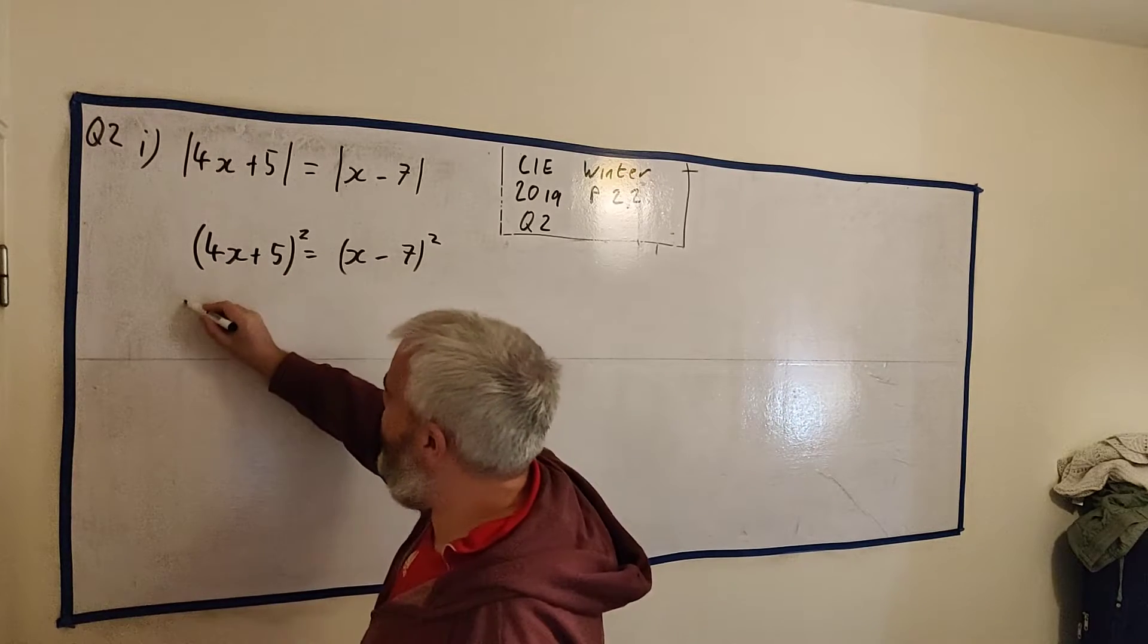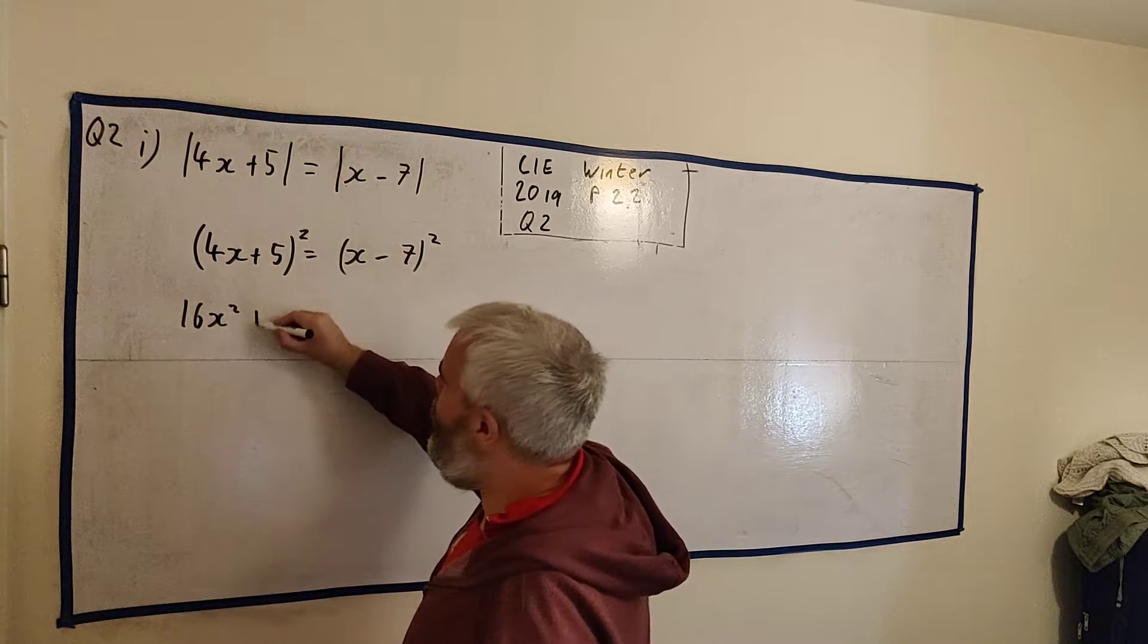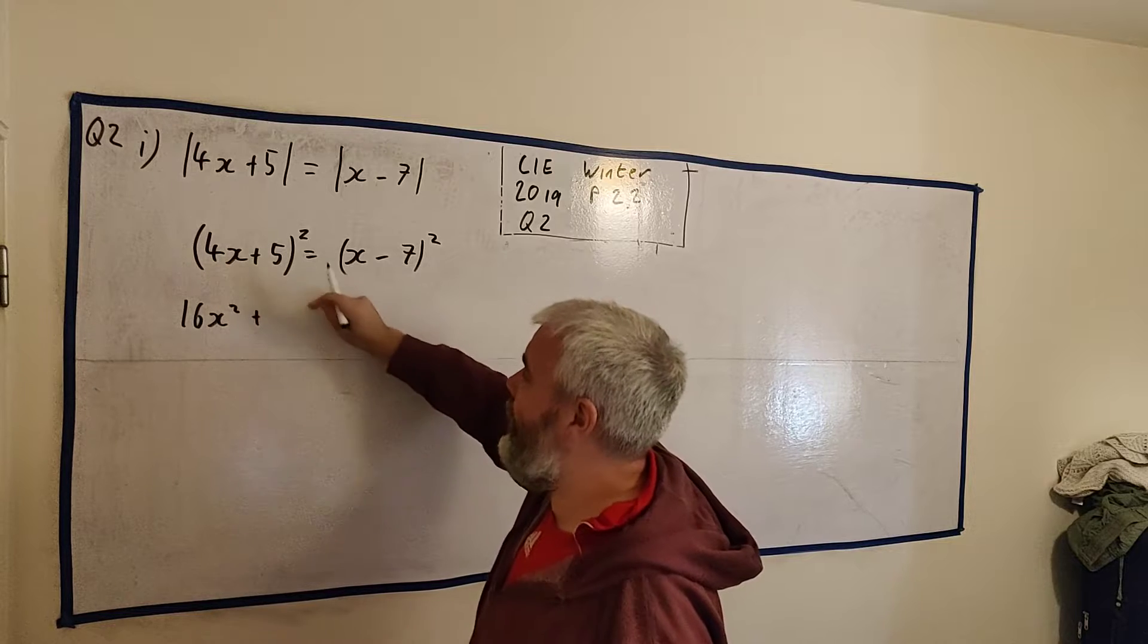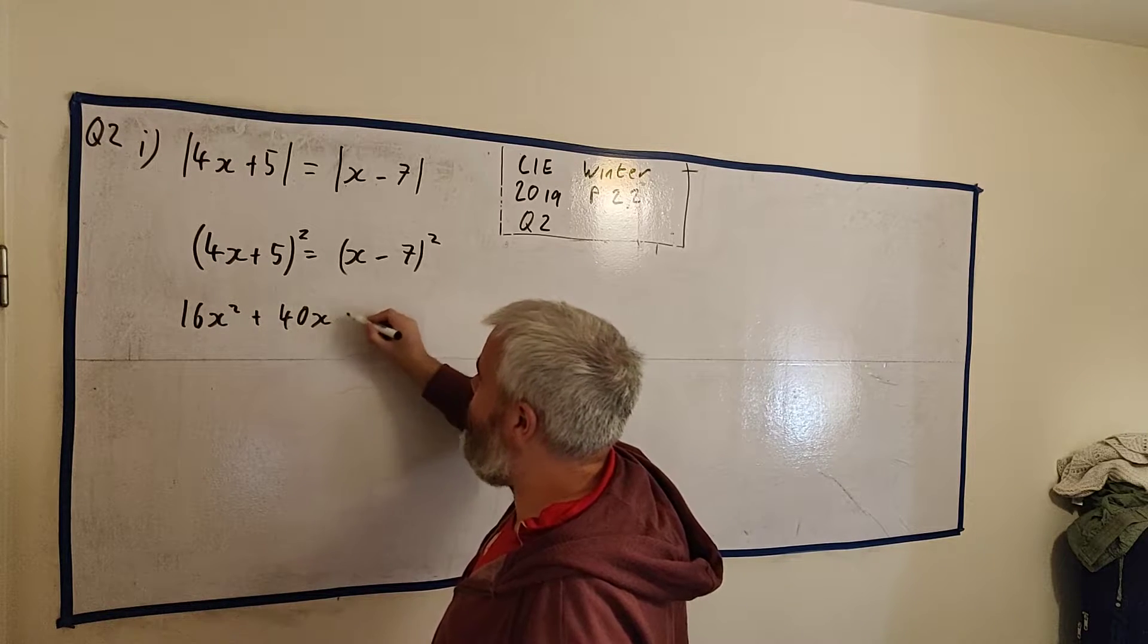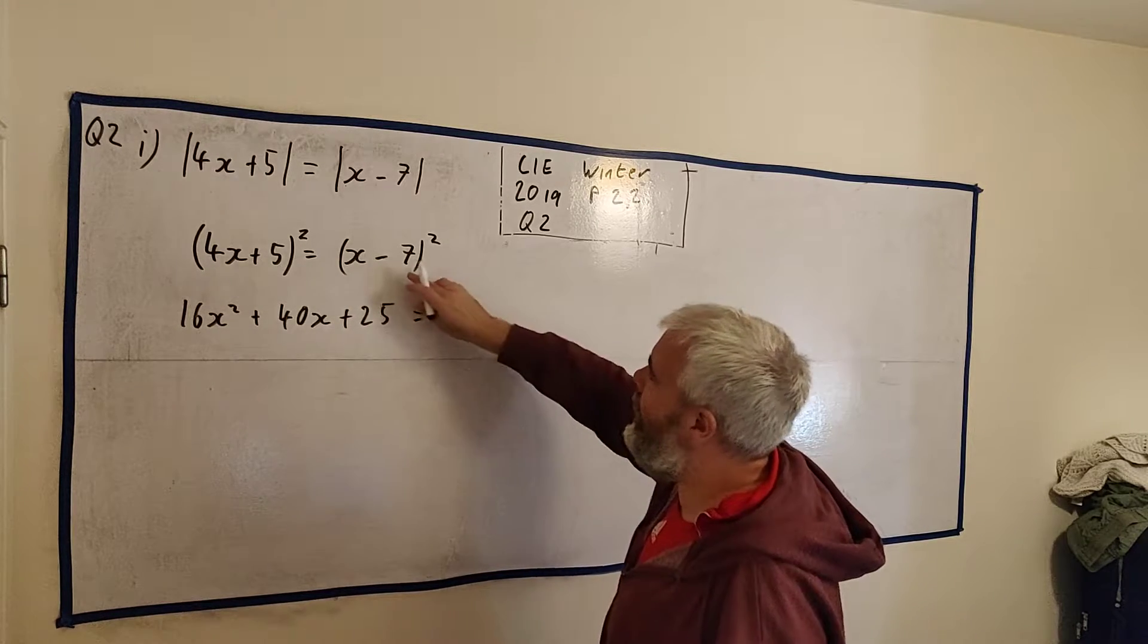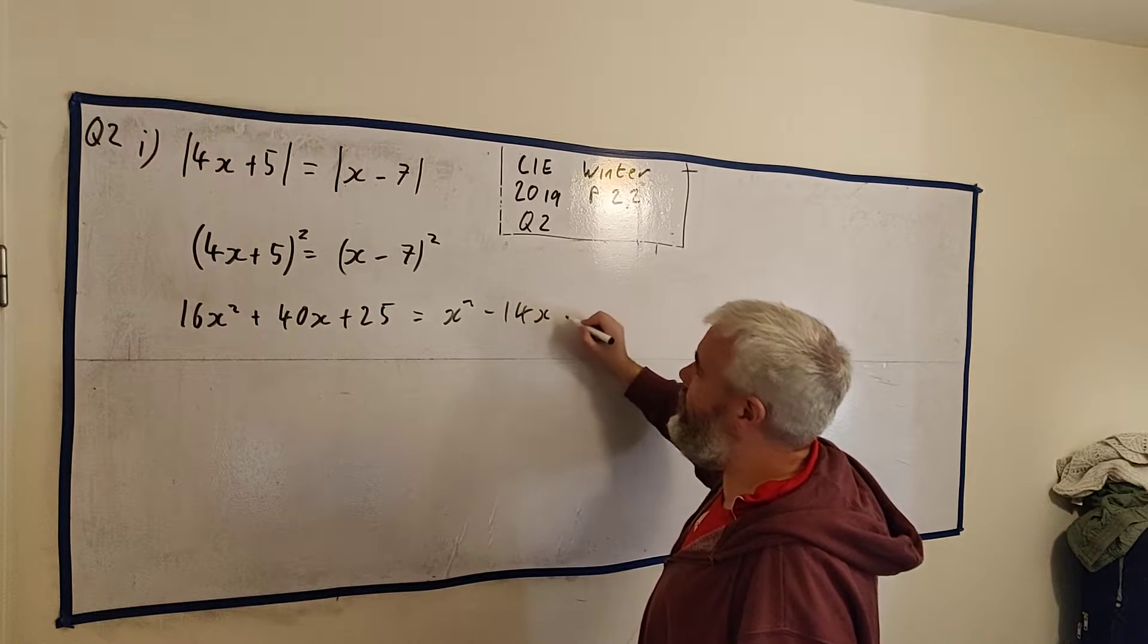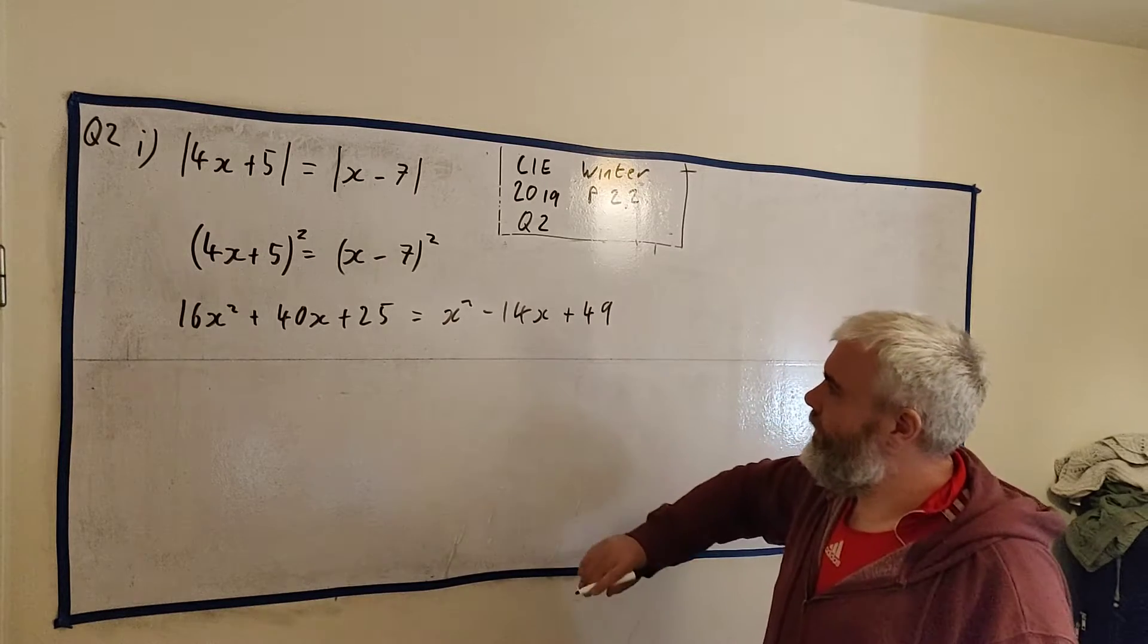We'll just square out both sides. The left side will come out as 16x squared plus 4x times 5x are 20, plus 4 times 5 are 20, are 40x plus 25. And on the right side, this is x squared minus 7 is minus 14x and then plus 49. So let's clean all this up.